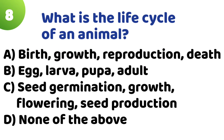Question 8: What is the life cycle of an animal? Option A: Birth, growth, reproduction, death. Option B: Egg, larvae, pupa, adult. Option C: Seed germination, growth, flowering, seed production. Option D: None of the above. The correct answer is Option A — Birth, growth, reproduction and death.